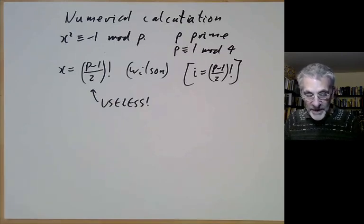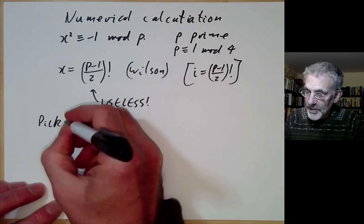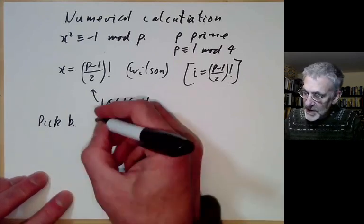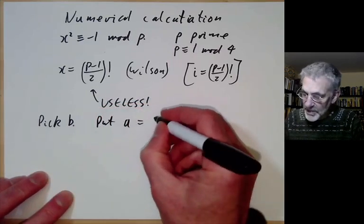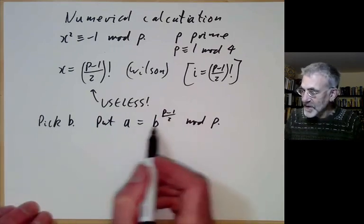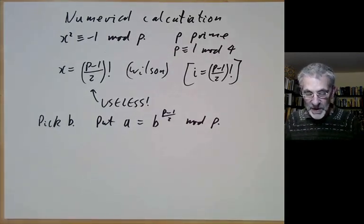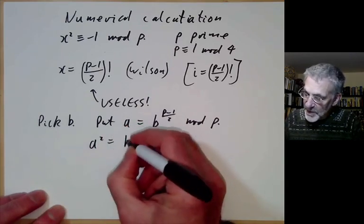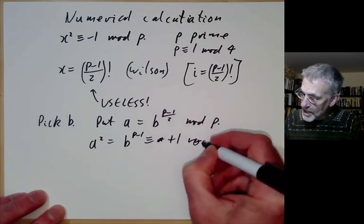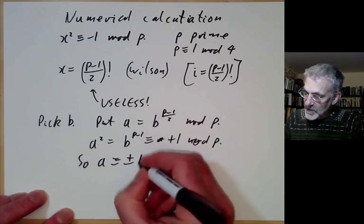Here's a faster method. We pick a number b — I'll discuss how to choose it later — and put a equals b to the (p minus 1) over 2 modulo p. This is very fast to calculate since we can work out powers modulo a number quickly. We notice that a squared is b to the p minus 1, which is congruent to plus 1 modulo p. So a is congruent to plus or minus 1 modulo p.